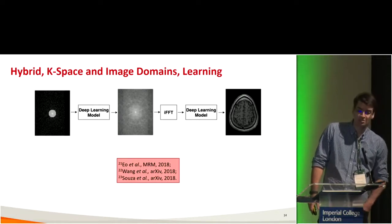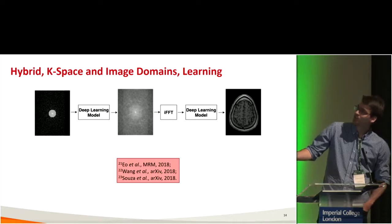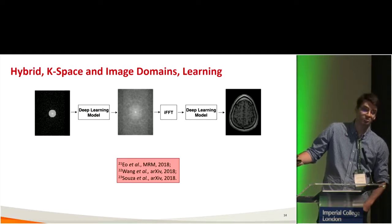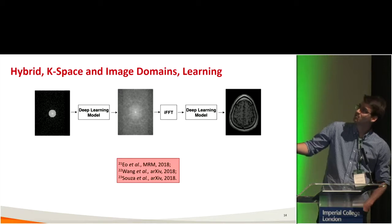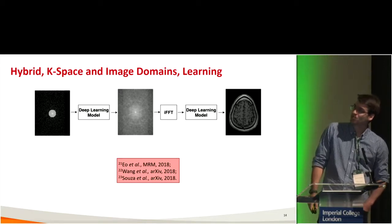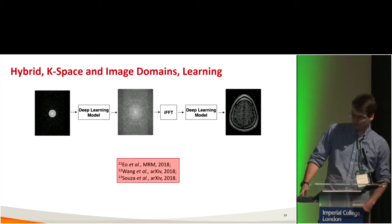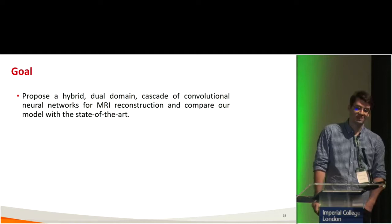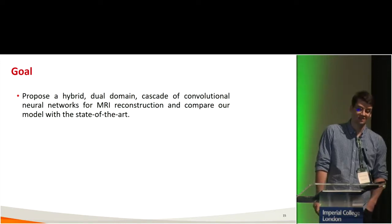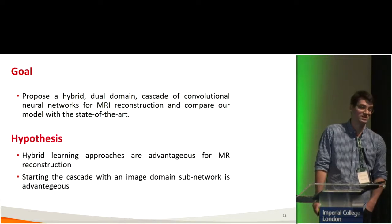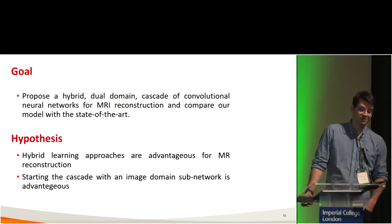In hybrid k-space and image domain learning, you act in both domains. You have a network in k-space domain, take the inverse FFT — without learning the transform — and then have a deep learning model in the image domain. The goal of my presentation is to propose a hybrid dual-domain cascade of CNNs for MRI reconstruction and compare against state of the art. My hypothesis is that hybrid approaches are advantageous, and that starting the cascade with an image domain subnetwork is advantageous.